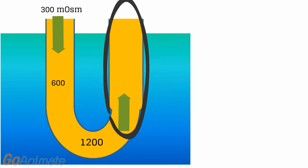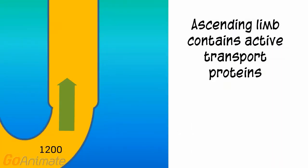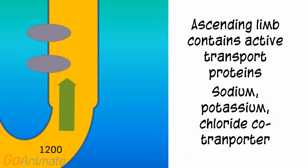Let's take a closer look at the ascending limb. The ascending limb contains active transport proteins. These are the NKCC proteins or sodium-potassium chloride co-transport proteins.